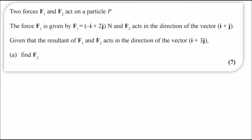Okay we're back guys, so for number seven we'll be looking at two forces F1 and F2 to act on a particle. We know that the force F1 is given by this equation which is F1 equals minus i plus 2j newtons, so that's the value of force and we also know that F2 acts in the direction of the vector i plus j.